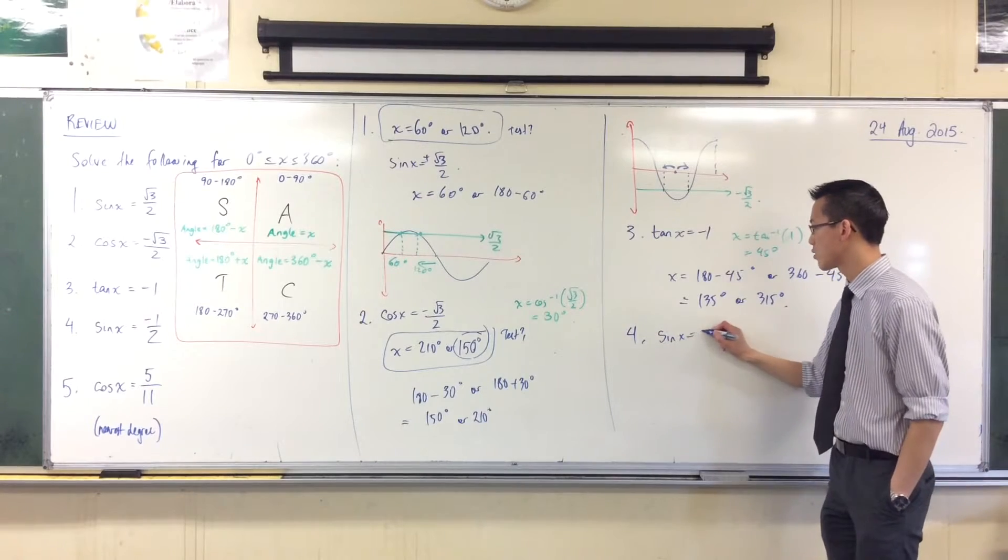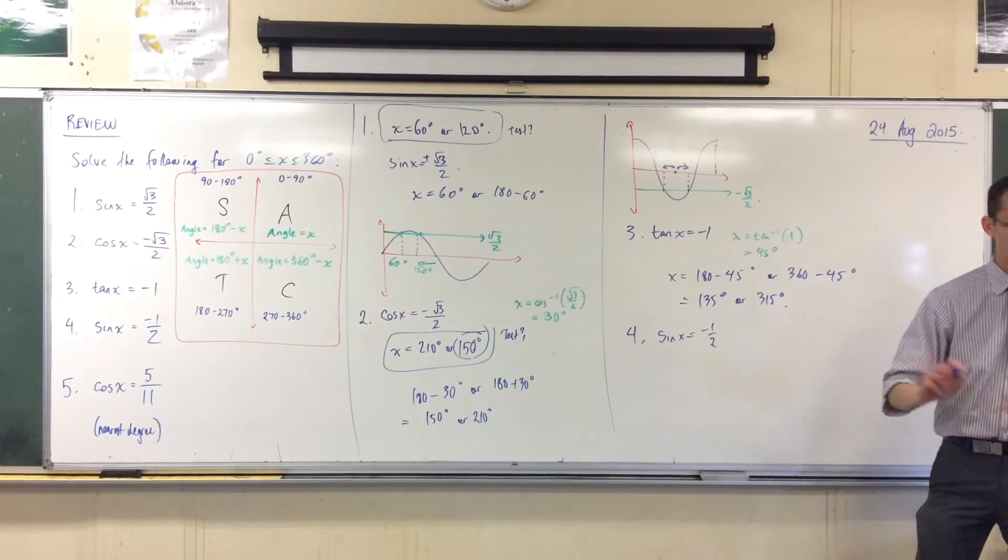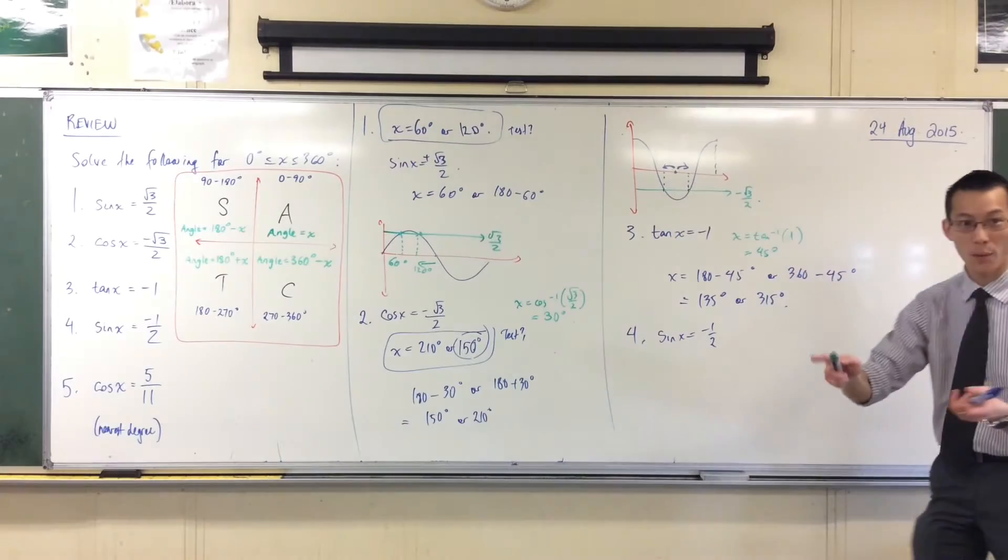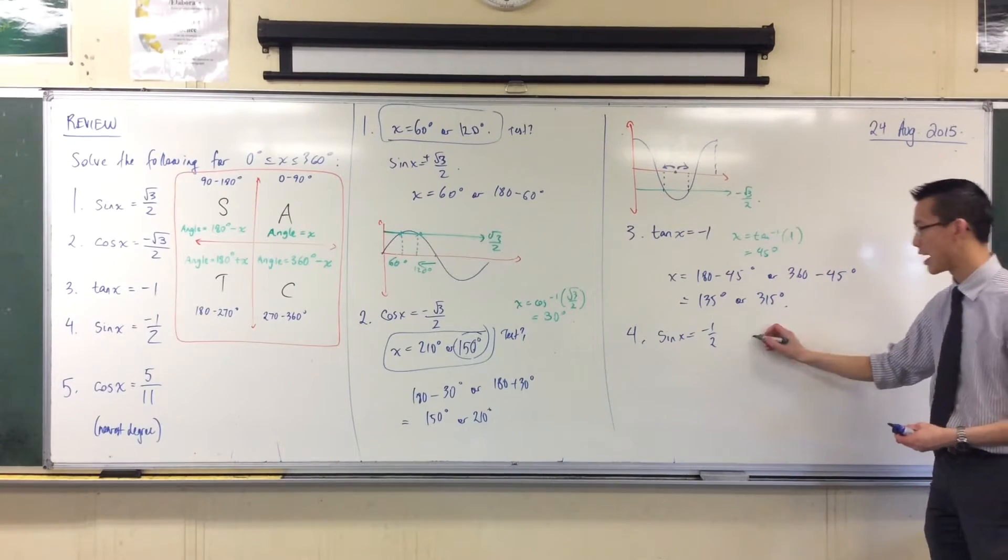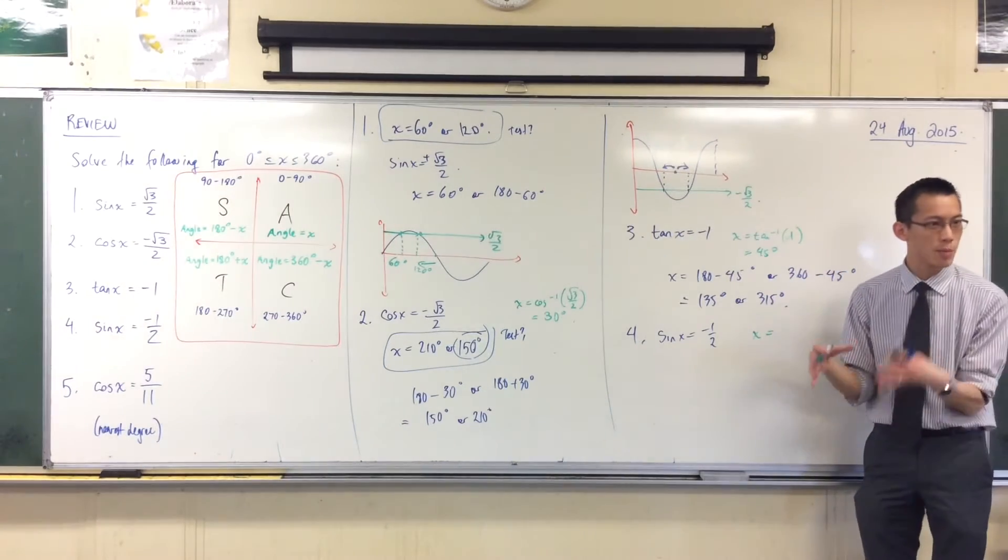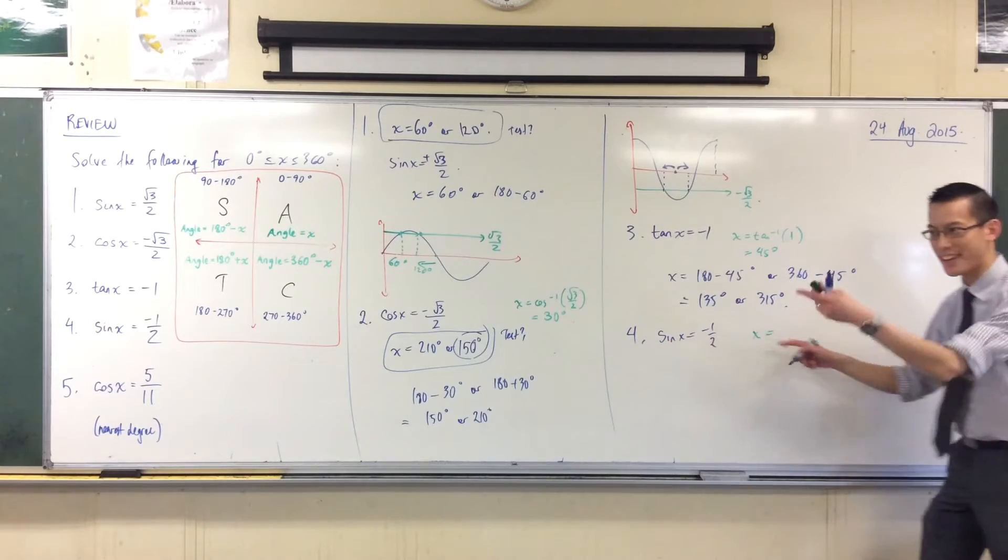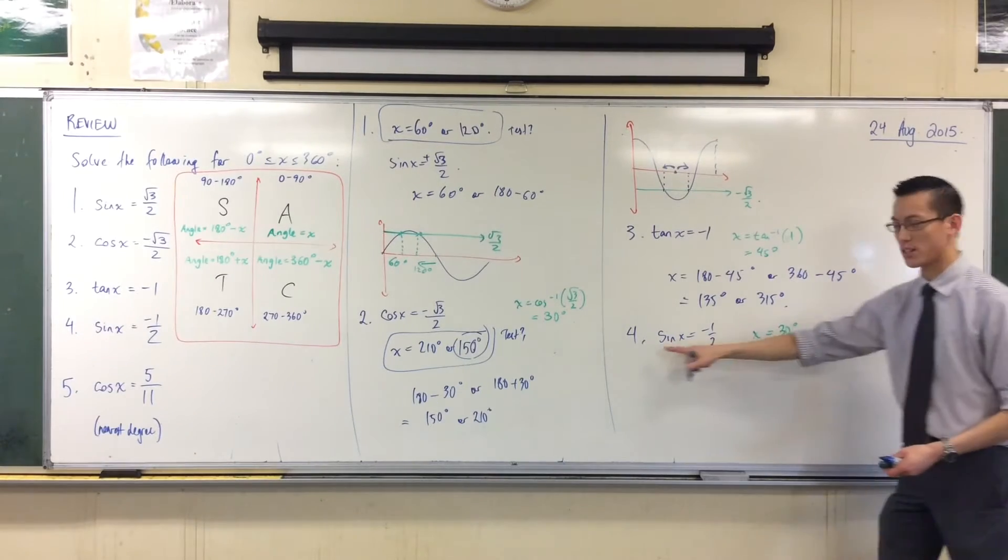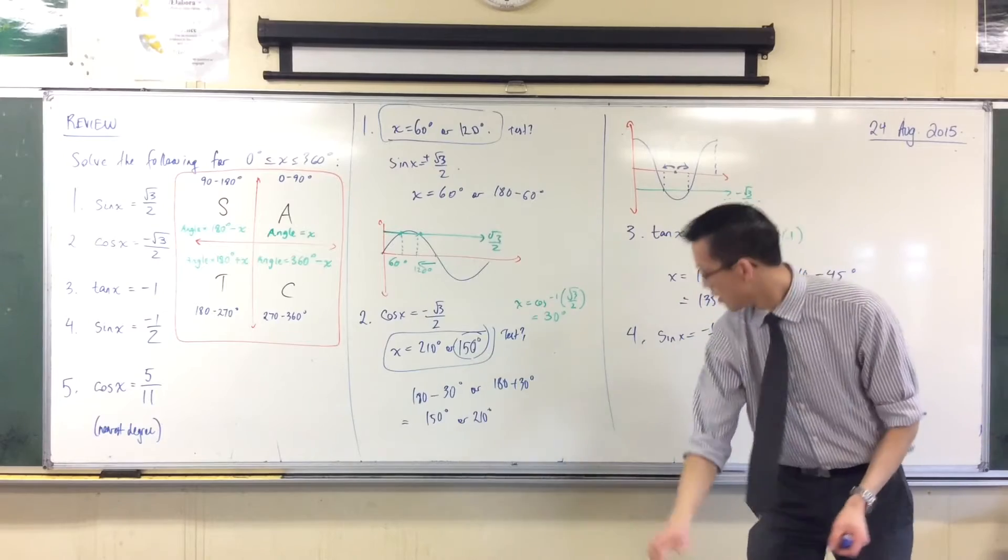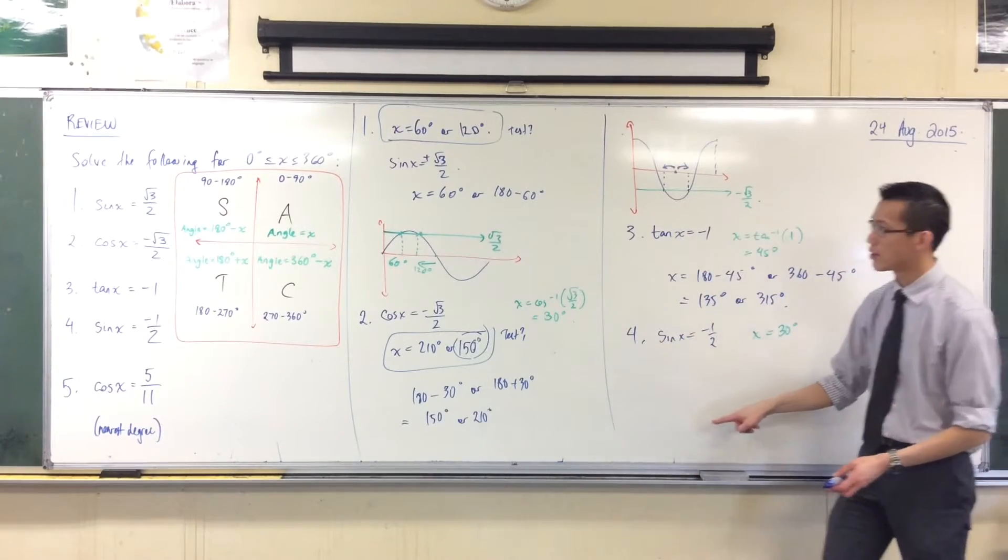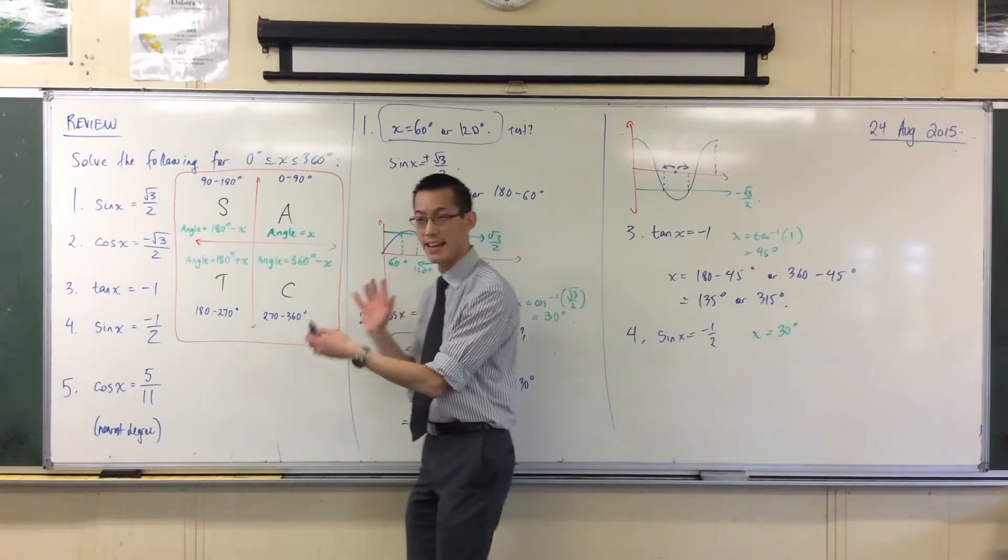If we do sine x equals minus 1 over 2, I wonder if you can tell me straight off, without reaching for your calculator, what's our basic small angle? It's going to be 30 degrees, right? Because you're thinking sine x equals a half, your first solution is 30. I want sine to be negative. In which quadrants is sine negative?